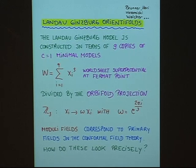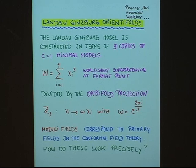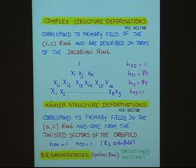The negative O3-plane charge is provided by orientifolds of Landau-Ginzburg models. The Landau-Ginzburg model is constructed in terms of nine copies of a k=1 minimal model. The worldsheet superpotential is the sum over nine minimal models with a superpotential at the Fermat point. We divide by an orbifold projection that identifies the spacetime coordinates, where ω is the third root of unity. In this theory, moduli fields correspond to primary fields in the conformal field theory. We have two sectors: the Neveu-Schwarz sector and the Ramond sector.